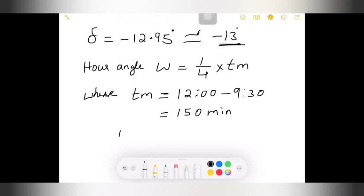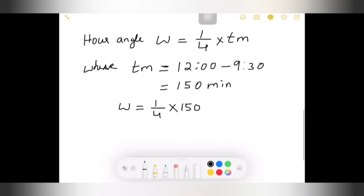Now if I can substitute in W, W is equal to 1 by 4 into 150. Then I will get the angle as, the hour angle W as 37.5 degrees. Try to practice remembering the formulas and how to determine n in the given problem, how to determine W from the given problem. This is W.